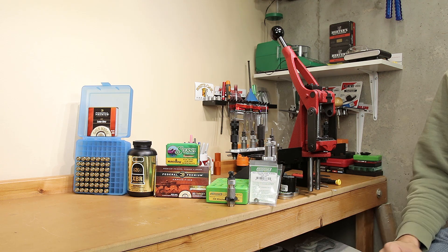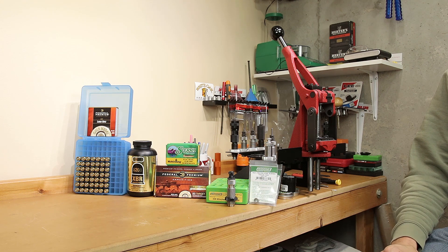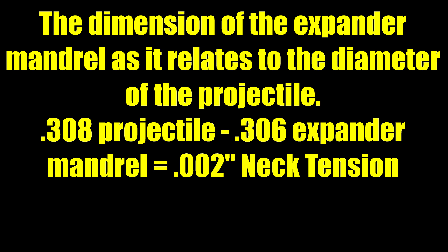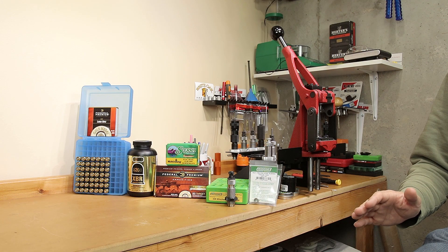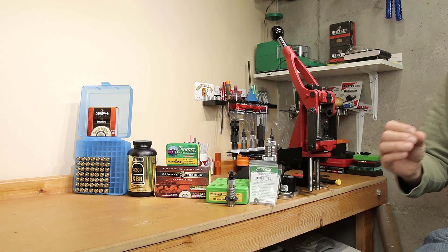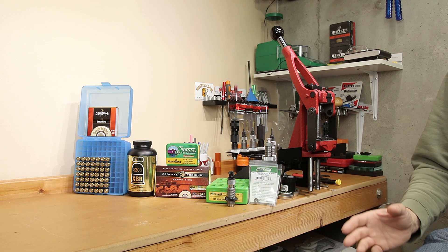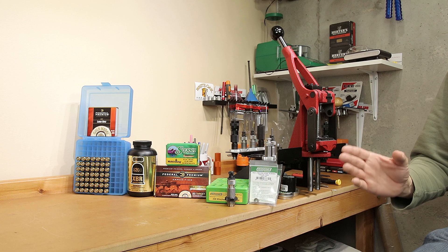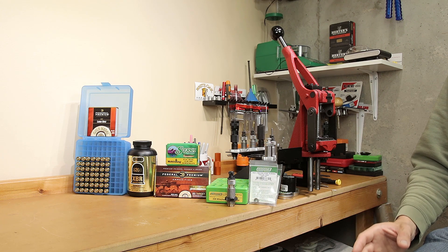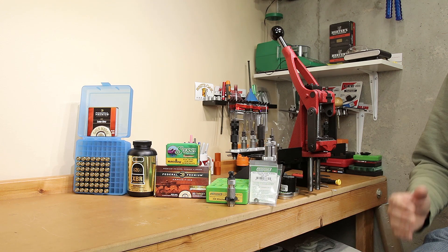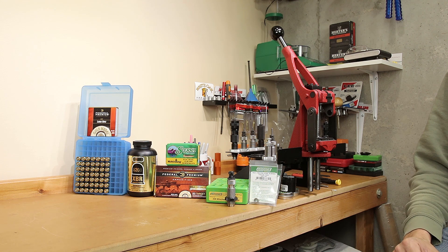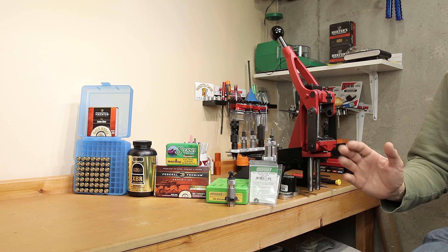So if you're working with a .308 projectile and the inside case neck measures .306, you're essentially using two thousandths of neck tension. More often I hear this term used by measuring a loaded round, picking a bushing that is X thousandths smaller than that, and referring to that as the amount of neck tension. This definition very frequently does not account for any spring back the case might have. The way I will mostly refer to it today is simply by using the dimension of the expander mandrel as it relates to the diameter of the projectile. Brass springback will change this value but I have no way of measuring exactly how much, so you should have no trouble understanding it and repeating it if you desire.